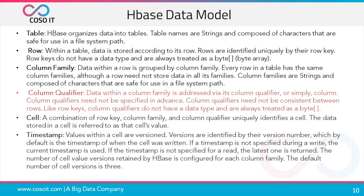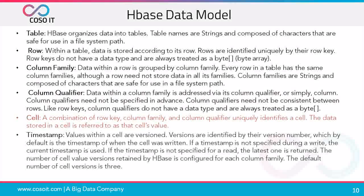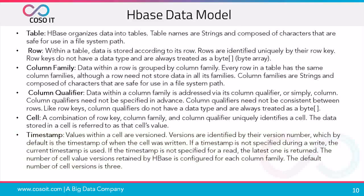Like row keys, column qualifiers do not have a data type and are always stored as byte arrays. A cell in an HBase table is uniquely identified by a combination of row key, column family, and column qualifier; the data stored in a cell is referred to as the cell value. Values within a cell are always versioned in HBase. Versions are identified by their version number, which by default is the timestamp of when the cell was written. If a timestamp is not specified during a write, the current timestamp is used; if not specified for a read, the latest one is returned. The number of cell value versions retained is configured per column family, with a default of 3.